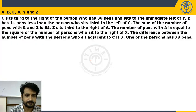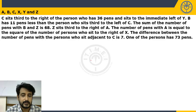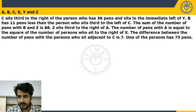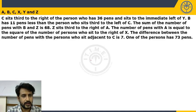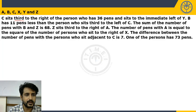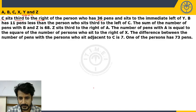We will copy the information to the next slide and complete it. For linear arrangement, we cannot take a definite structure like we can for circular, months-based, or square arrangements — unless we know the definite position of one person. Let's start from the first clue: C sits third to the right of the person who has 36 pens. Third to the right means two gaps to the right. So we have: 36 pens person, two gaps, then C.